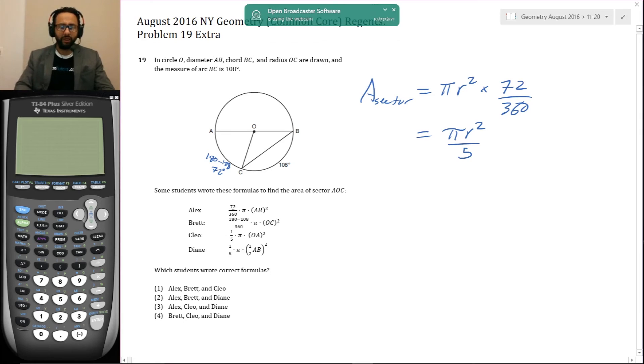Alex's answer is 72 over 360. So he has 72 over 360 and he has the pi and then he has AB squared. AB is the diameter, D squared. This is not the answer. So Alex is actually wrong. Immediately we've eliminated three choices, one, two, and three. And we suddenly know that choice four is the answer. That was pretty quick.